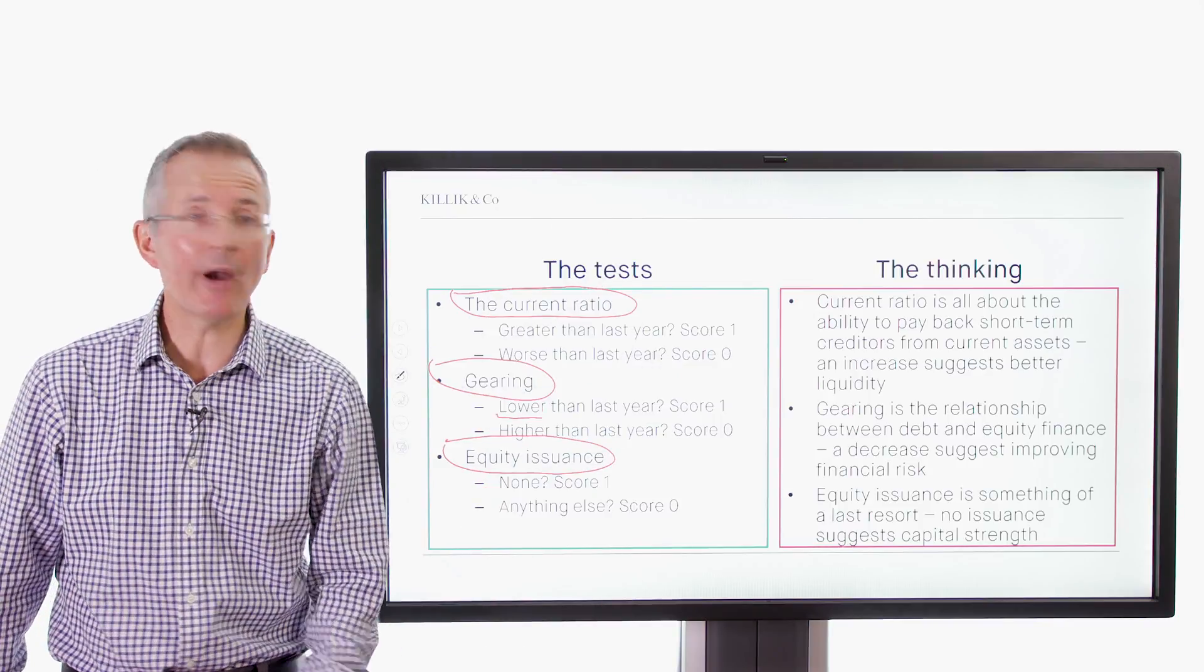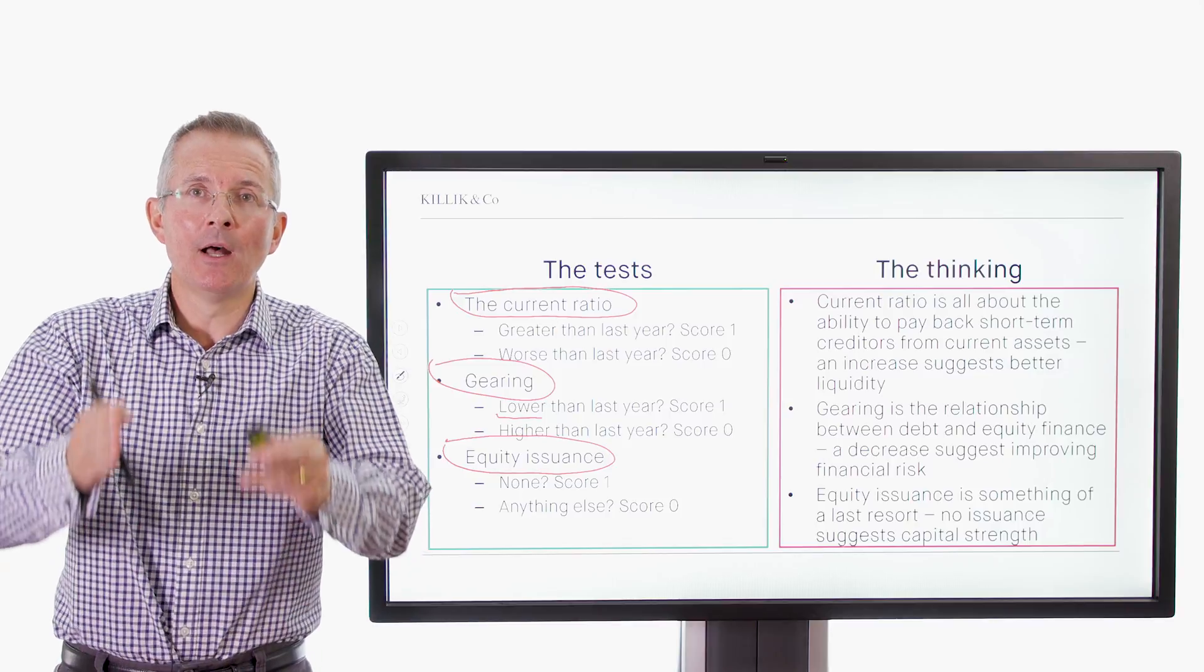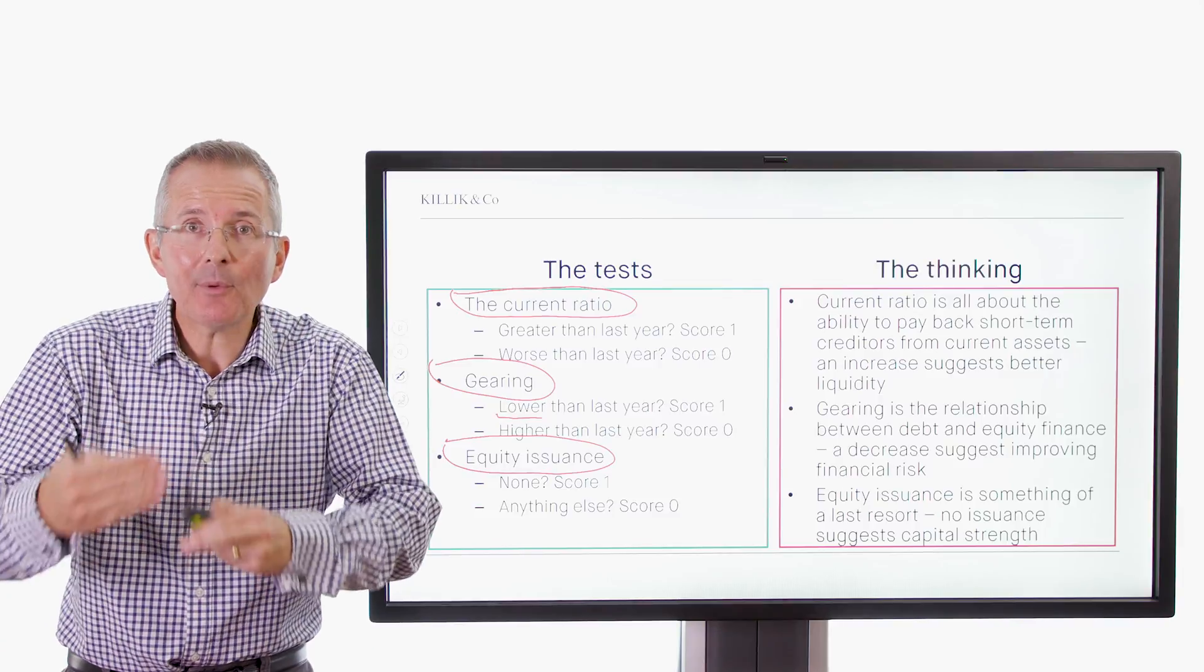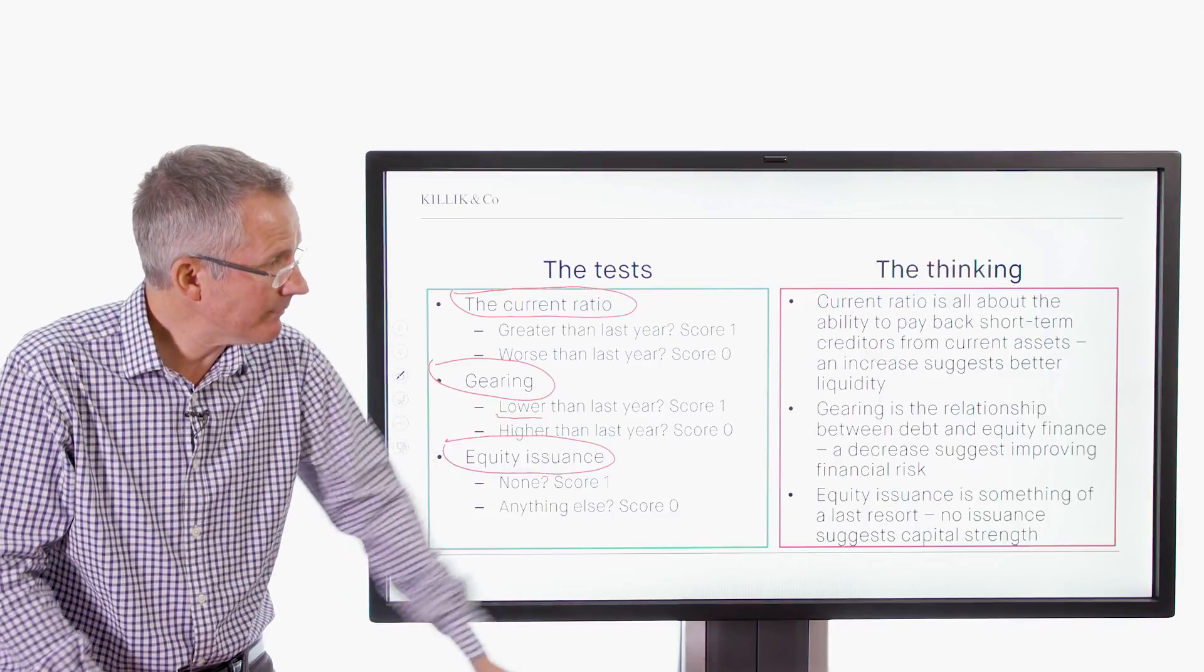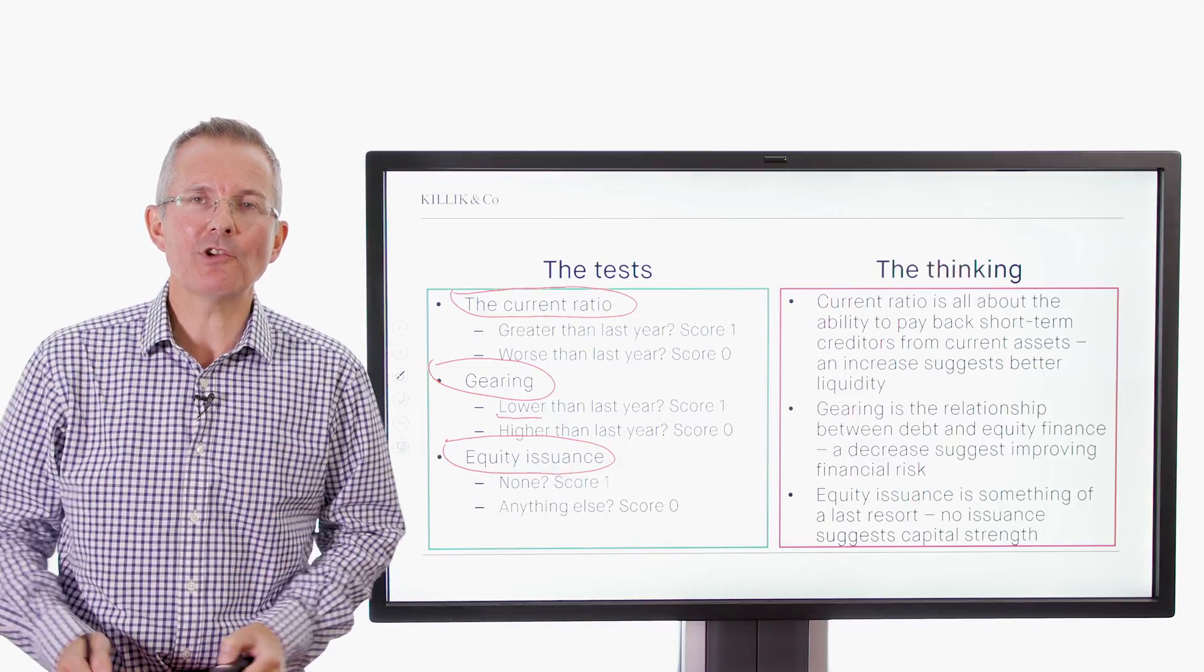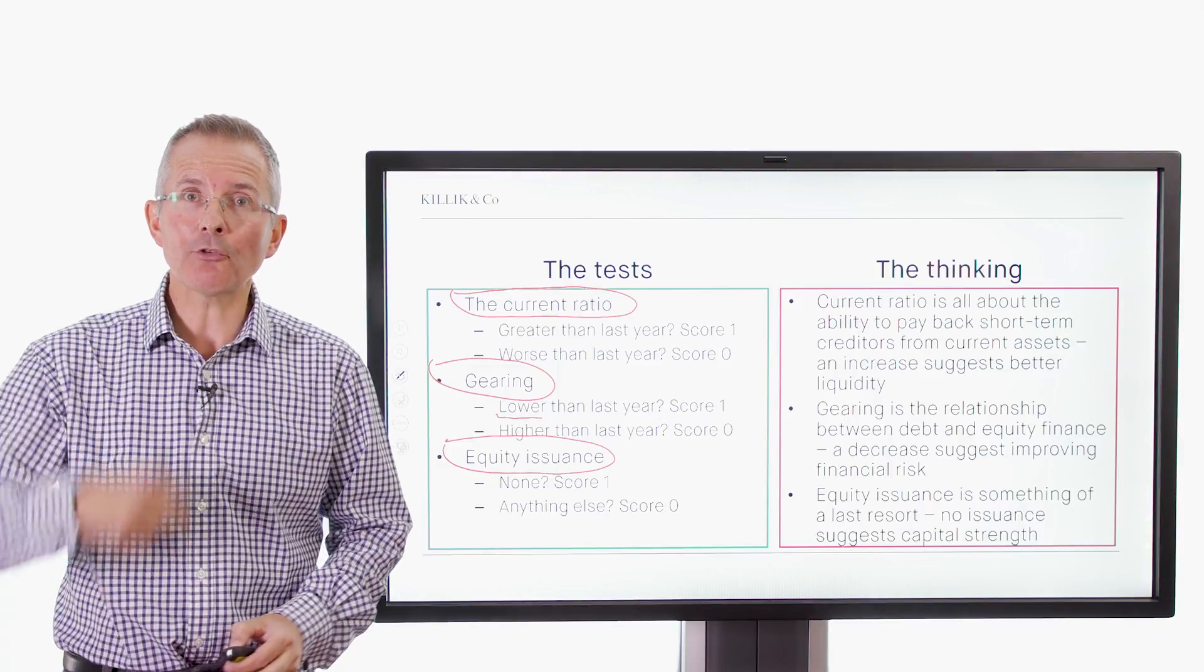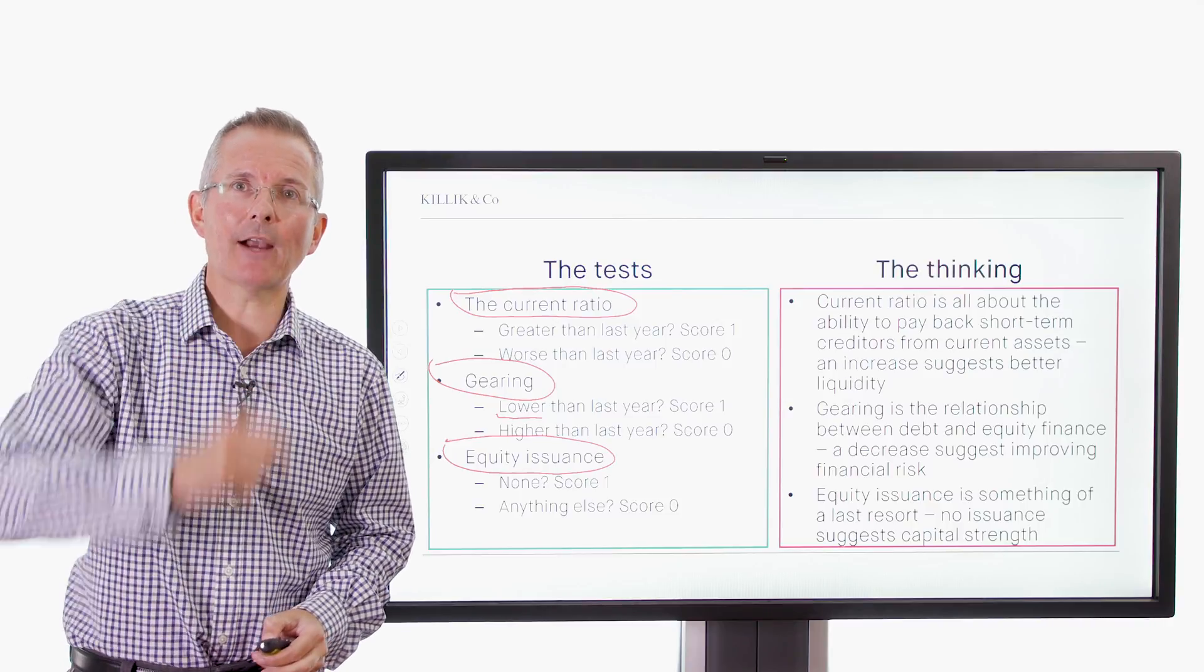And the logic, which I've kind of covered already, the current ratio is all about the ability to pay back short-term liabilities. So that's liquidity, immediate liquidity. Gearing is the relationship between debt and equity finance. That's more about the way you are structured financially. And equity issuance, as I mentioned before, is an overall demonstration of capital strength, in the sense that if you haven't had to go there, perhaps you are the stronger company as a result. So three more points, potentially, to gather there, to build up to a maximum nine.